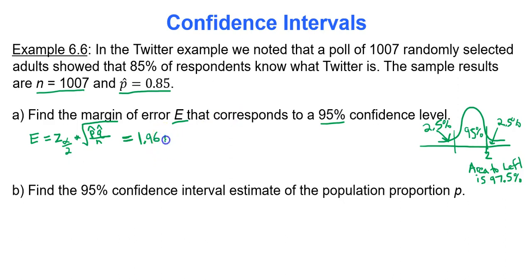We need to know, we got our square root, p-hat is 0.85. What would q-hat be? Well, q-hat is actually 1 minus p-hat. 1 minus 0.85, it's 0.15. And sample size n is 1007.